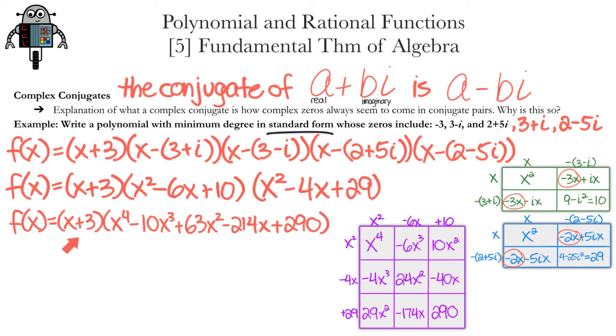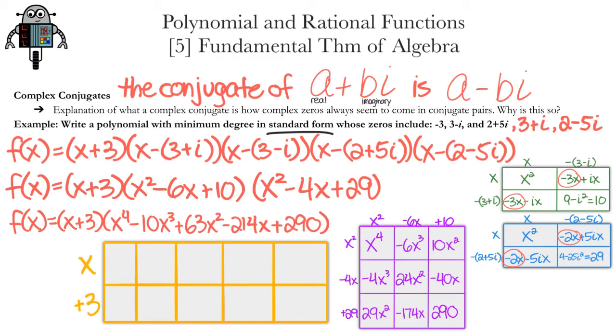We can distribute x + 3 to the rest of these terms by setting up a box like this. For the top left box, we have x times x to the 4th, which is x to the 5th. Then negative 10x to the 4th, 63x cubed. Notice that the degrees of these terms are getting smaller and the rest of the terms. Then we have 3x to the 4th, negative 30x cubed, and so on until 870. The product of those two polynomials is the sum of all of the terms.